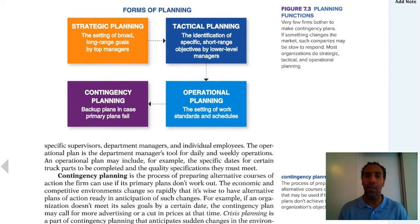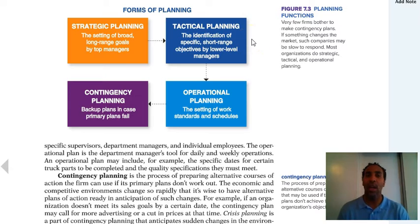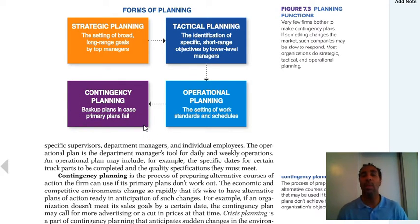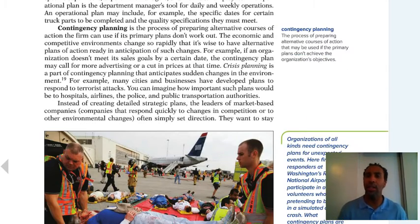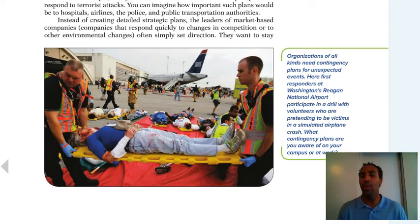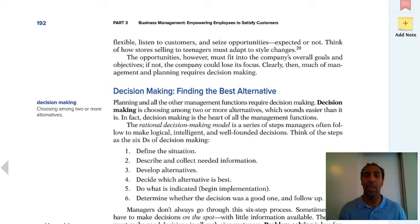Review these four boxes: strategic planning is the setting of broad, long-range goals by top managers. Tactical planning is the identification of specific short-range objectives by lower-level managers. Operational planning is the setting of work schedules and standards. And contingency planning — any time you hear the word contingency, that means your backup plan. Contingency planning is the process of preparing alternative courses of action in case primary plans don't achieve the organization's objectives.